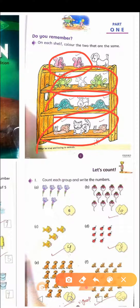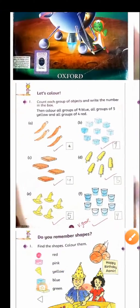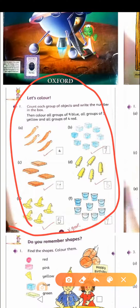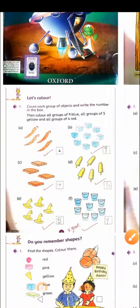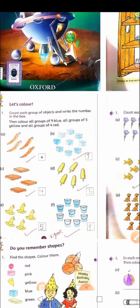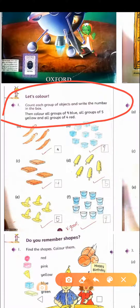This is page number two, which is also very easy. Here they ask children to count each group of objects and write the number in the box, then color...